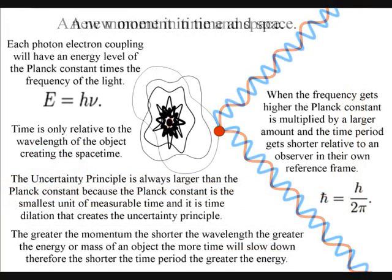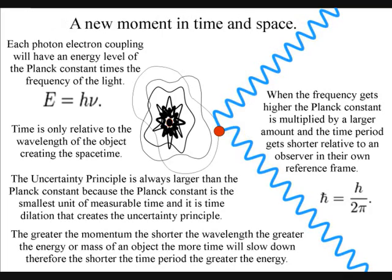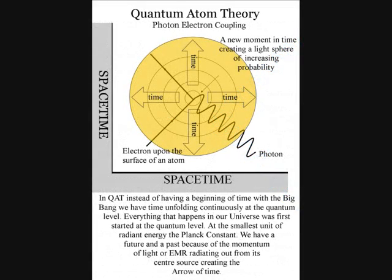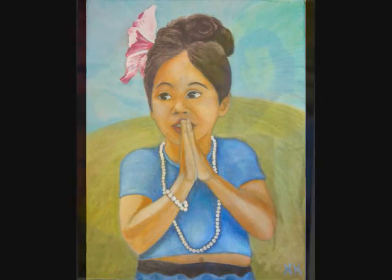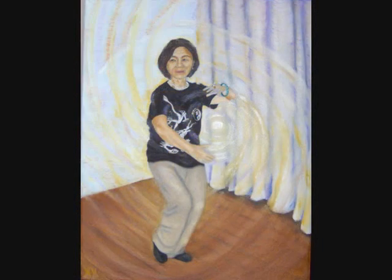In this theory, at the quantum level of the atoms, the moment of now is created by a single photon-electron coupling, creating a wave function of future possibilities. Even the individual atoms of the observer are radiating electromagnetic radiation continuously. The observer will feel this as the continuous flow of time, and as the aging process.